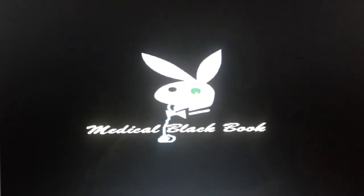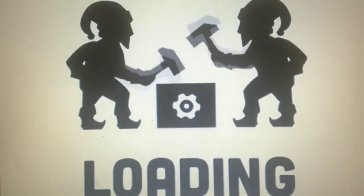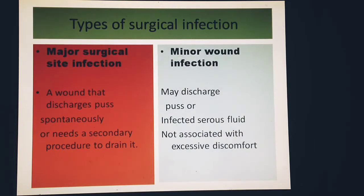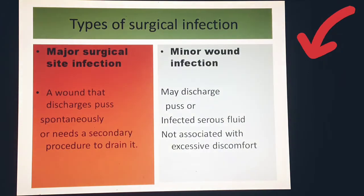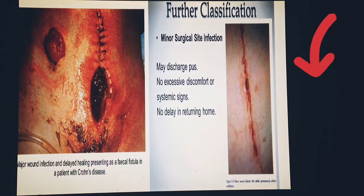Assalamu alaikum and welcome to the Medical Black Book. Today's topic is surgical infection, which is basically of two types: major surgical site infection and minor wound infection. In major surgical site infection, a wound discharges pus either spontaneously or needs a secondary procedure to drain it. In minor wound infection, it may discharge pus or infected serous fluid, not associated with excessive discomfort.